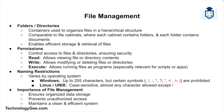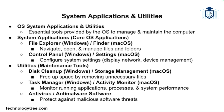Next let's talk about system applications and utilities. An operating system provides essential system applications and utilities to help users manage their computers. System applications are core applications provided by the operating system for common tasks. For example, File Explorer in Windows and Finder on Mac allow you to navigate, open, and manage files and folders.